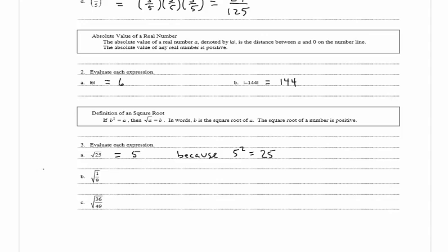In b we have the square root of 1 over 9, and that can be written as 1 third. 1 third squared is equal to 1 ninth.